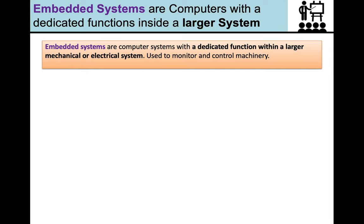So the third type of system we're going to look at are embedded systems and embedded systems are computer systems with a dedicated function inside a larger system. So are embedded systems dedicated systems, or dedicated systems embedded systems? Well, the first one, embedded systems are computer systems with a dedicated function within a larger mechanical or electronic system. And they're used to monitor and control machinery.